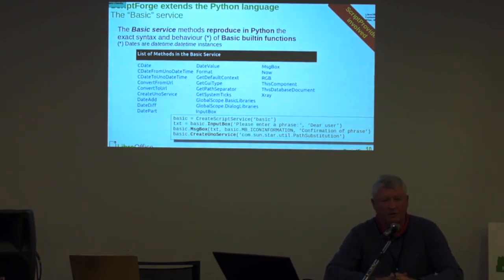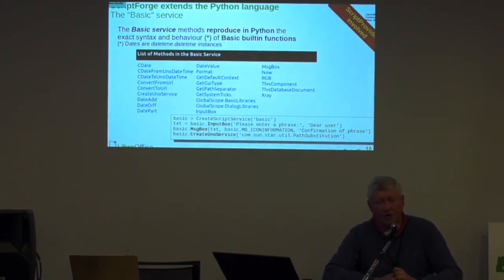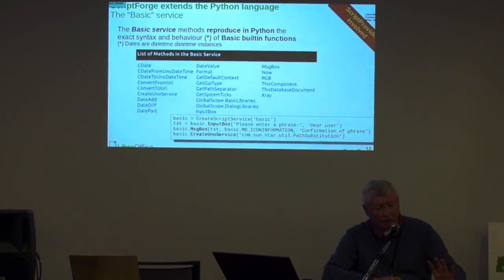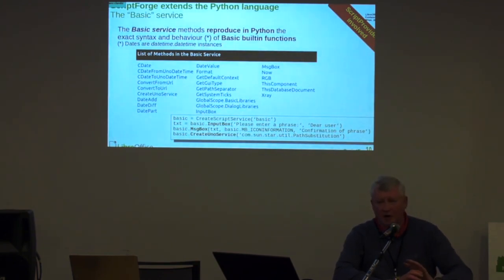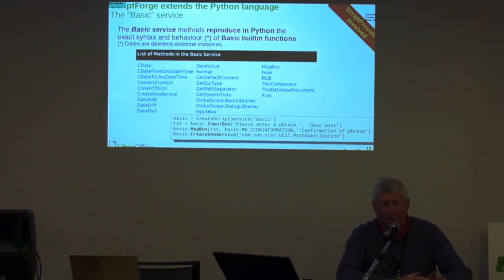You have the list of functions that are made available. Many of them are written in BASIC in the background, not all of them — some are directly in Python or something else. But this makes, for instance, that we are able to have a user interface — a true message box — that is exactly identical in Python and BASIC, so that you have scripts that mix both. You just have to call the same message box function from BASIC or from Python; it's really identical.